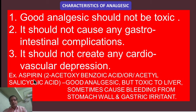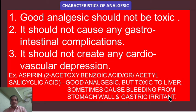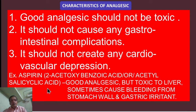An example is aspirin, which is 2-acetoxybenzoic acid or acetylsalicylic acid. It is a good analgesic but is toxic to the liver and sometimes causes bleeding from the stomach wall and gastric irritation. Aspirin is also a blood thinner (blood diluent). Therefore, only a restricted amount of aspirin is given because it has dangerous side effects including liver damage.